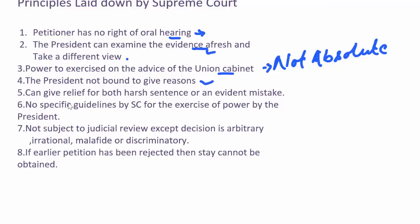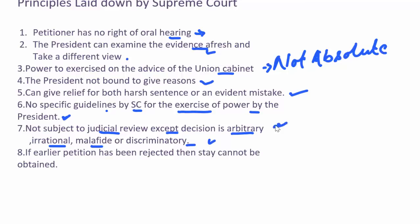Fifth, he can give relief for an unduly hard sentence or if he considers that the judiciary has made an evident mistake. Sixth, there are no specific guidelines by the Supreme Court for the exercise of this power. Seventh, the exercise of the pardoning power of the President is not subject to judicial review — he cannot be taken to court for any decisions regarding his pardoning power, except when the decision is arbitrary, irrational, malafide, or discriminatory. This means the Court has kept open a small window for judicial review.